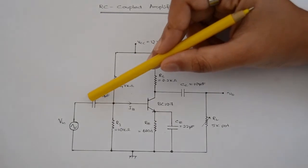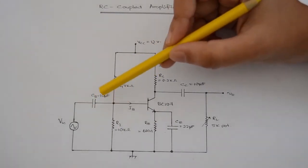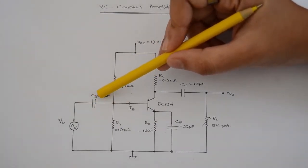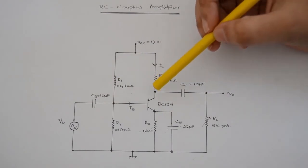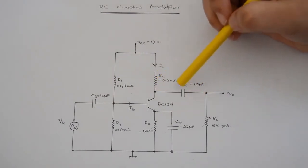Input signal Vin is coupled to the base through the capacitor CB. Output signal is coupled from the collector through the capacitor CC.